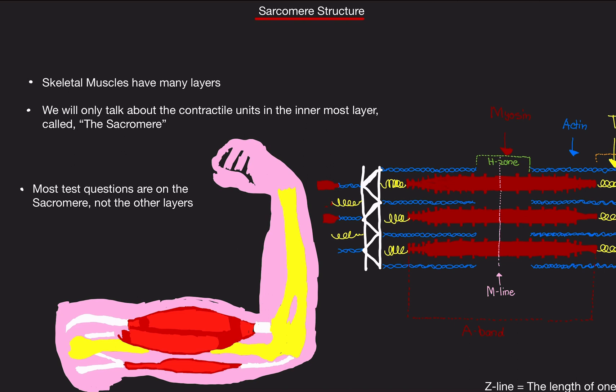Any muscles you can move has sarcomeres. So that's why I draw this picture here of a bicep, tricep. I'm just indicating this is what we're talking about. This is the type of muscle we're talking about.